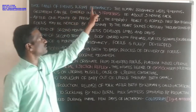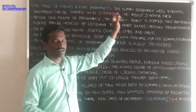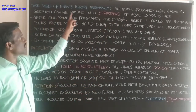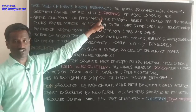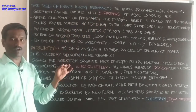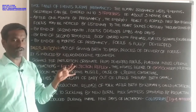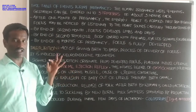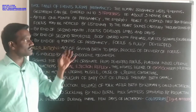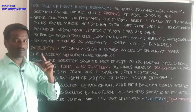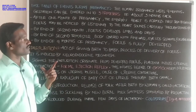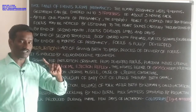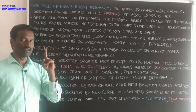Timetable of events during pregnancy: the human pregnancy lasts 9 months. Gestation can be divided into 3 trimesters. Each one of the trimesters is about 3 months each, totaling 3 trimesters.